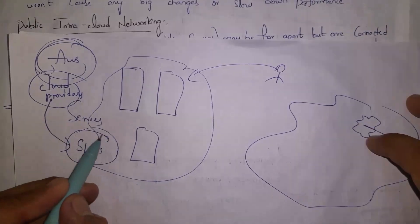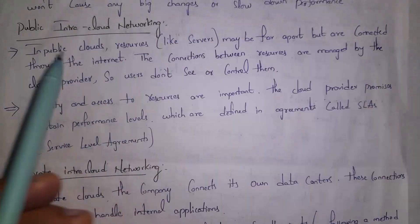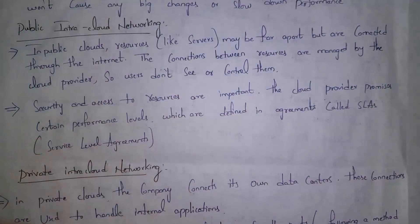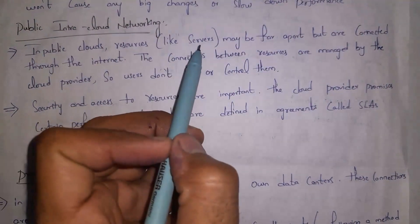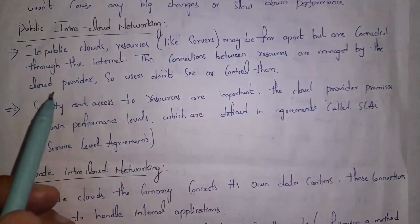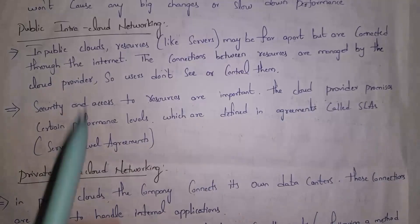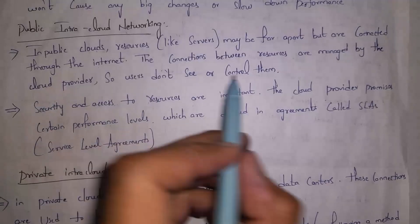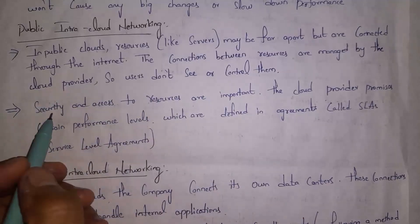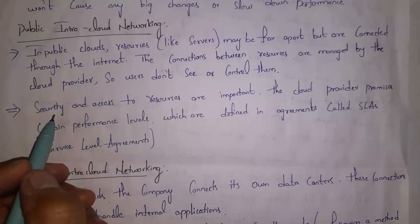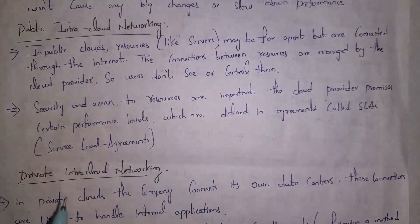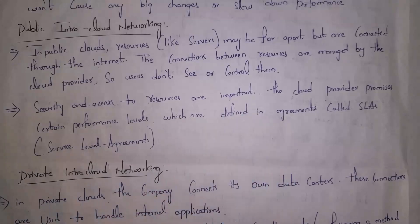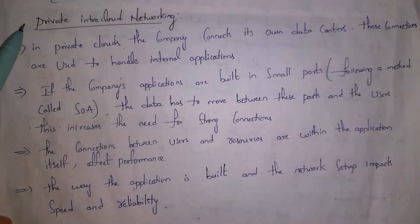Service level agreements are the agreements between the user and the cloud provider. In public clouds, resources like servers may be far apart but are connected through the internet. The connection between resources is managed by the cloud provider, so the user doesn't see or control them. Security and access to resources are very important, and the cloud provider promises certain performance levels defined in service level agreements.